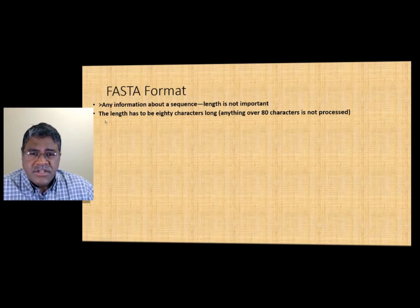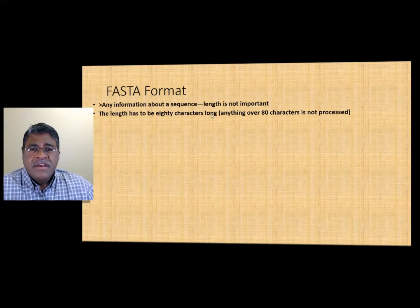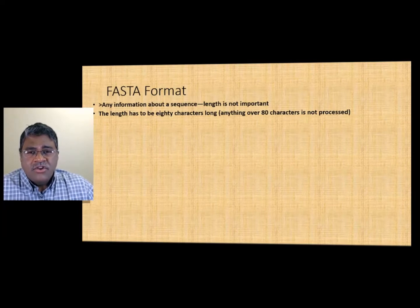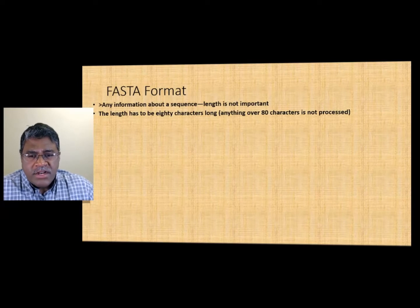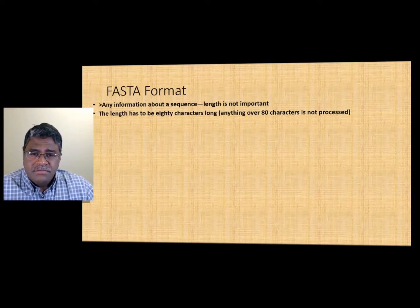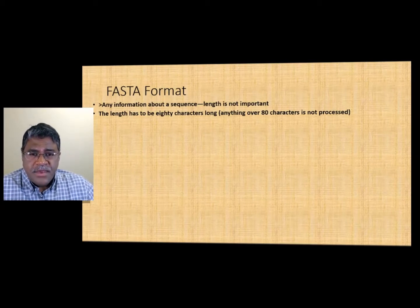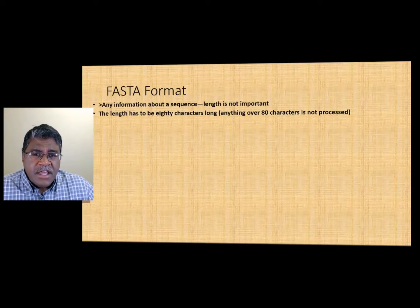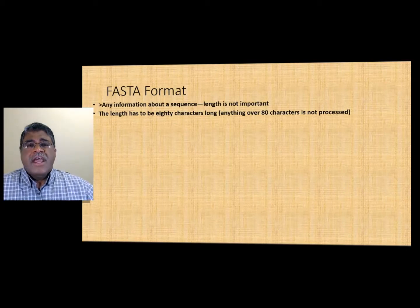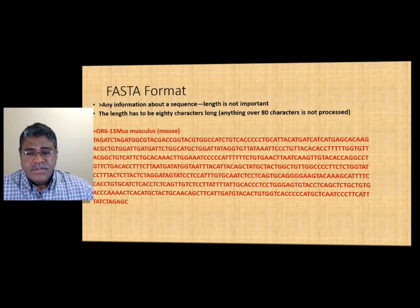Beneath the line that contains the caret and information about the sequence, you will see the beginning of the sequence. Now remember, the length has to be 80 characters long. So if you have a sequence that's 320 amino acids or nucleotides long, you're going to write it in four lines, each 80 characters long. It can be shorter and that's not a problem. But if you go over 80 characters, your sequence is not going to get processed — it's going to stop at 80 characters and move to the next line.